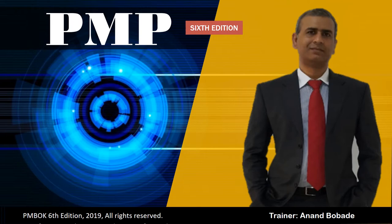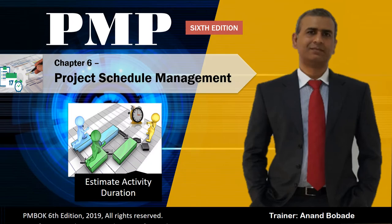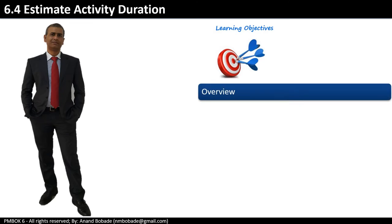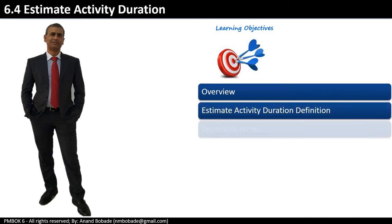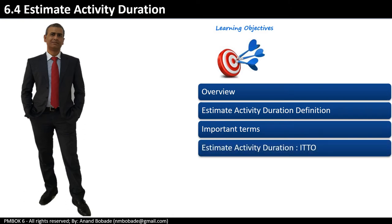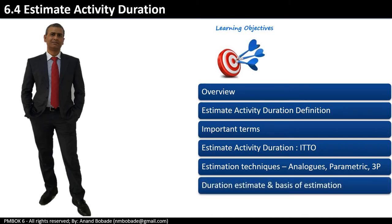Welcome back to a new session. This is your trainer and PMP coach Anand. This is a continuation of the Schedule Management knowledge area. In this session, you will learn the Estimate Activity Duration process. The learning objectives are: we will start with an overview of the process, go through the process definition, discuss important scheduling terms, cover ITTOs, and talk about estimation techniques like analogous, parametric, and three-point estimates, as well as duration estimates and basis of estimation, followed by a quick review.